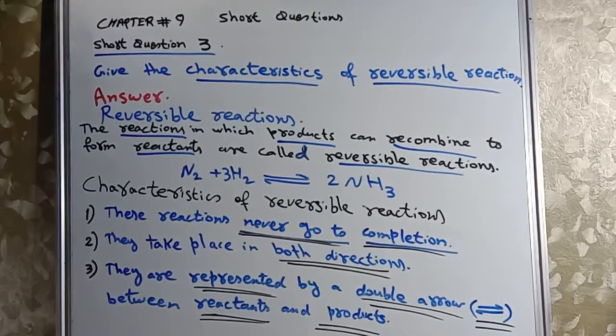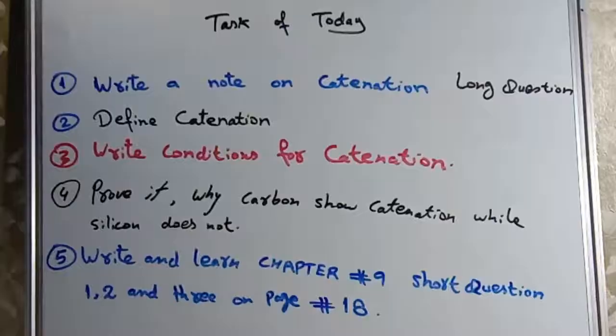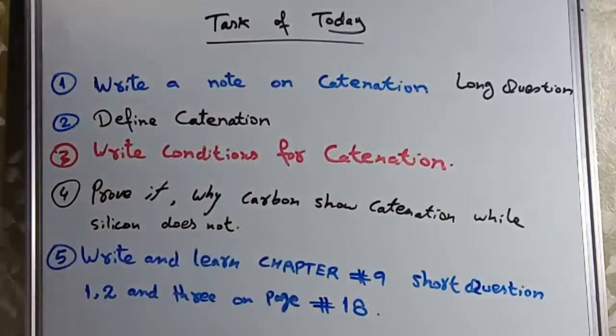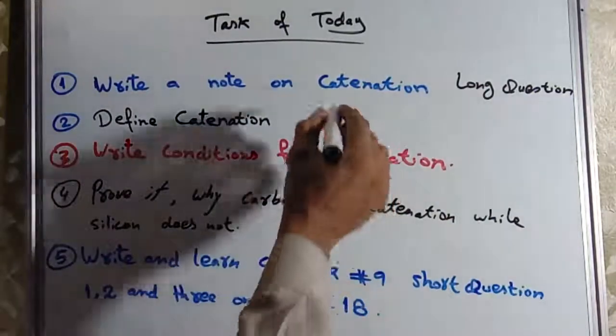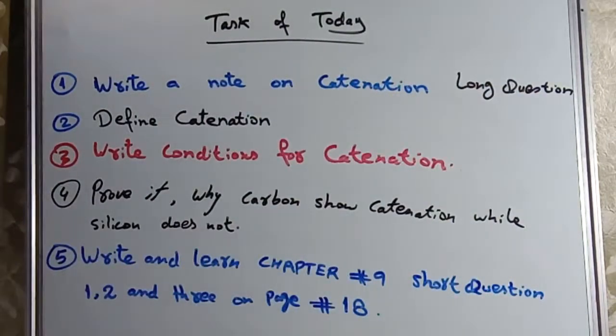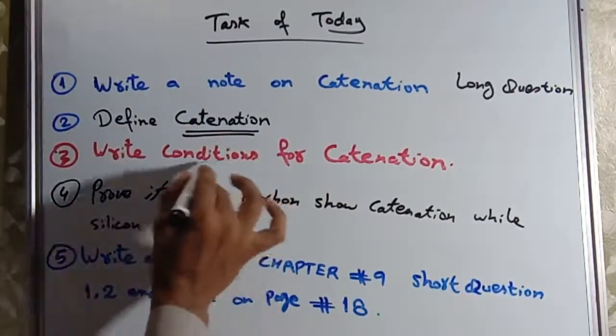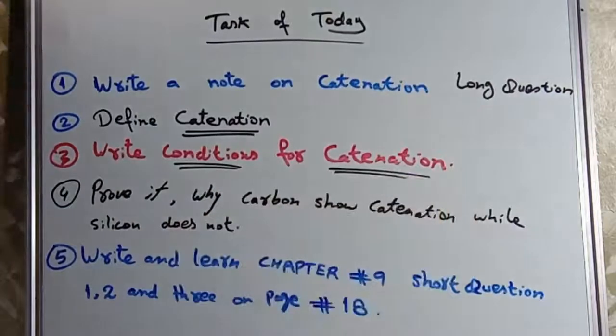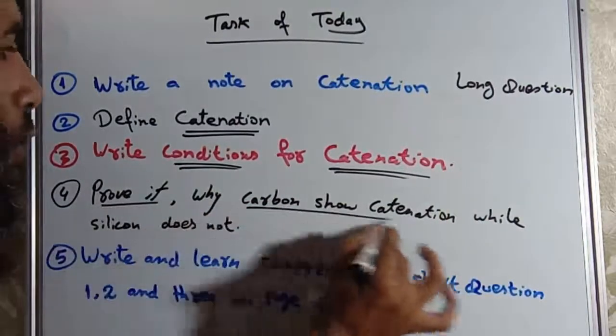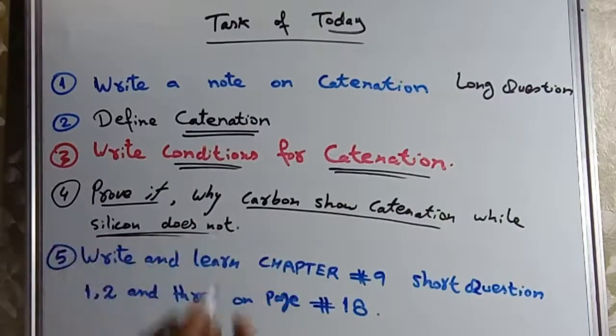My dear friends, first three questions. Next questions start in next lesson inshallah. Task for today: Long question - write a note on catenation. Number 2 - define catenation definition. Number 3 - write conditions for catenation. Number 4 - prove carbon show catenation while silicon doesn't. Compare carbon carbon, silicon silicon, carbon oxygen, silicon oxygen.